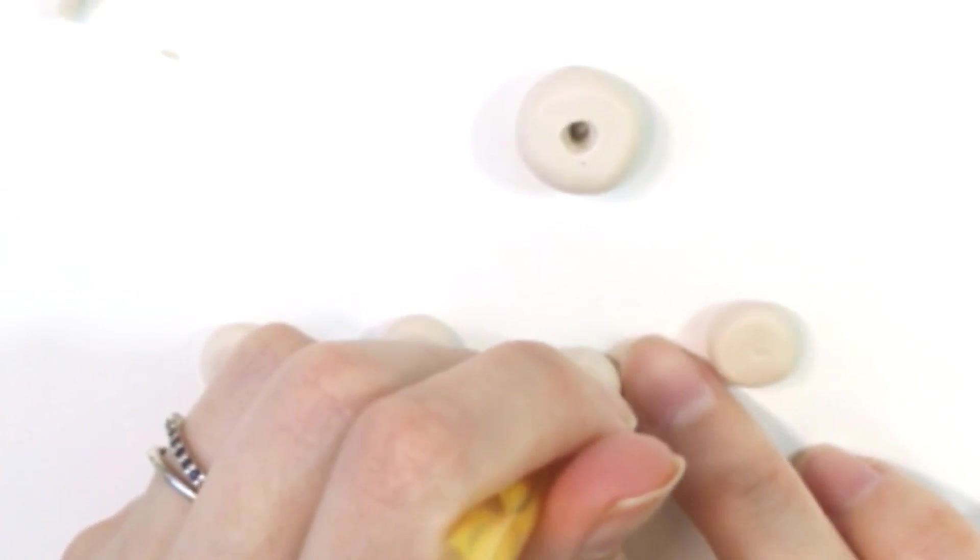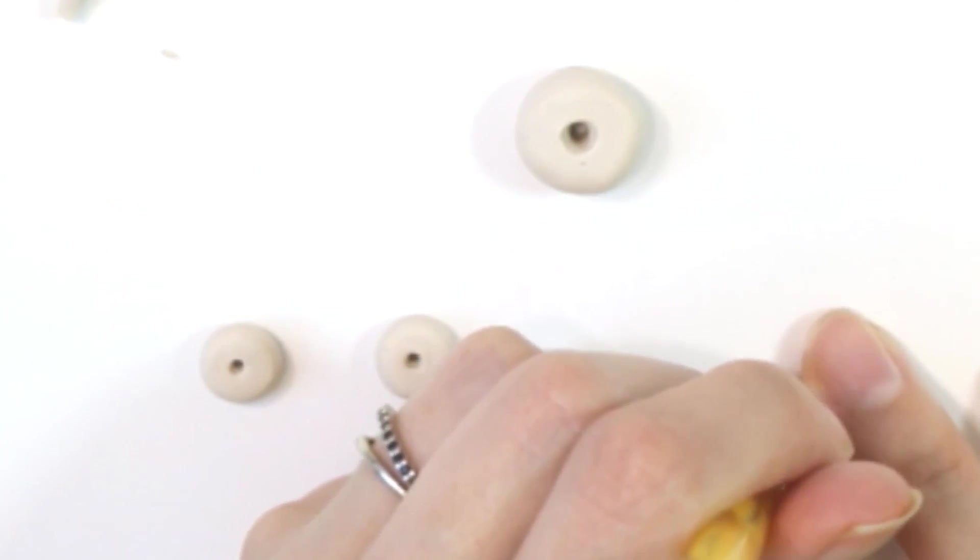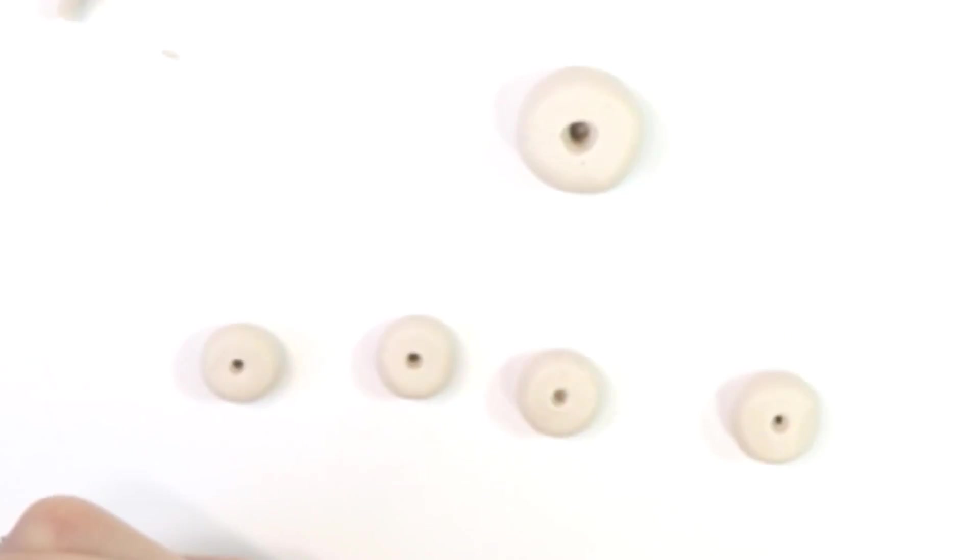We're going to do this again for the dangle earrings. These are the medium sized donuts we're making. Then we're going to flip those over again.